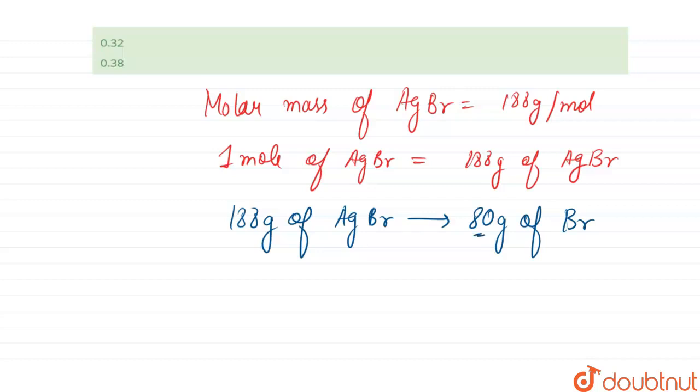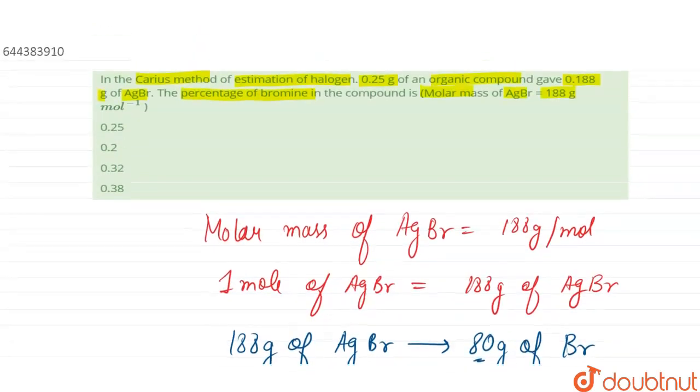So from here, for one gram of AgBr we will have 80 by 188 gram of bromine. In the question we have been given some amount of AgBr that is produced, that is 0.188 gram.